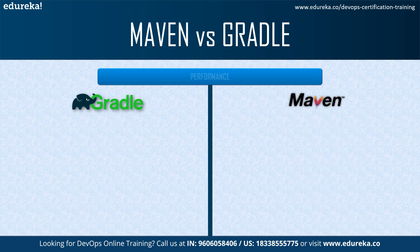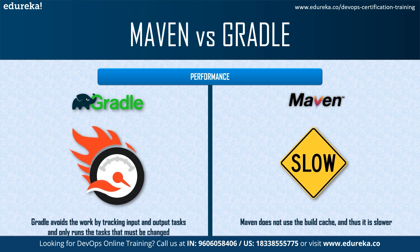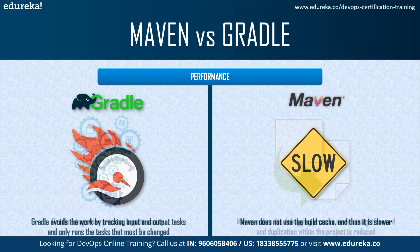The next aspect is performance. Performance-wise, Gradle avoids unnecessary work by tracking input and output tasks and only runs the tasks that need to be changed, giving faster performance. Maven, on the other hand, does not use a build cache, and hence the build time is slower than Gradle.